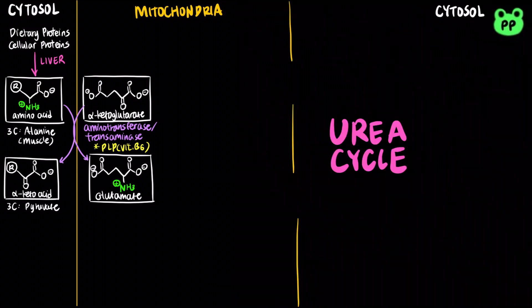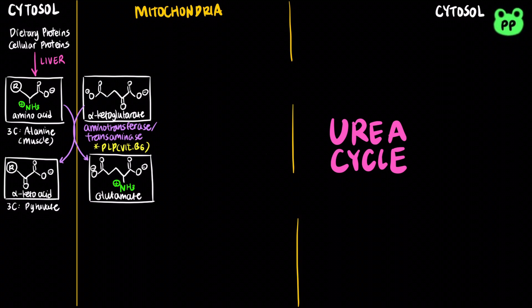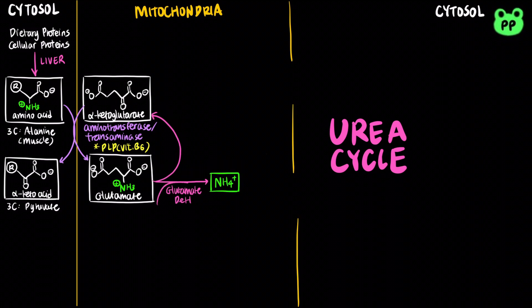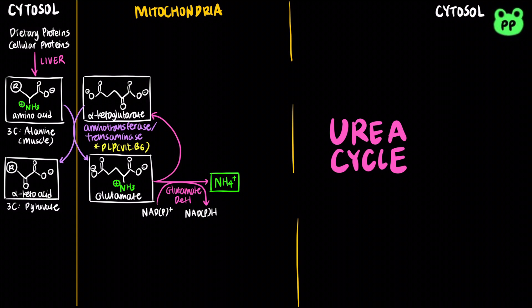Glutamate, which contains all the amino groups collected from different amino acids (indicated by green), is then transported into liver mitochondria where it undergoes oxidative deamination catalyzed by glutamate dehydrogenase, coupled to the reduction of either NAD+ to NADH or NADP+ to NADPH, to form alpha-ketoglutarate and ammonium ion.